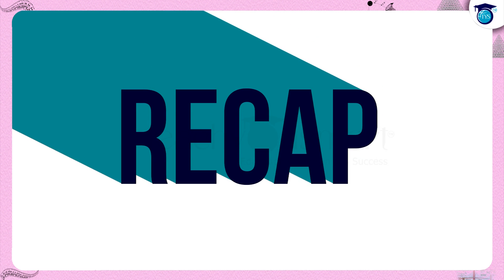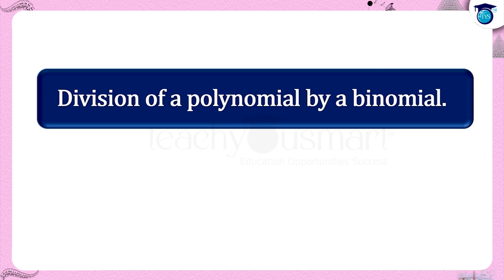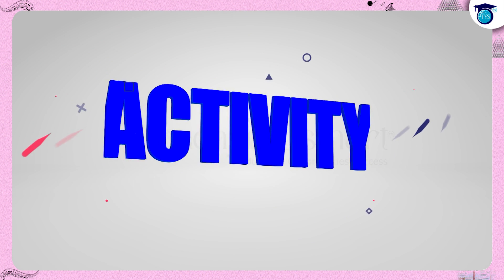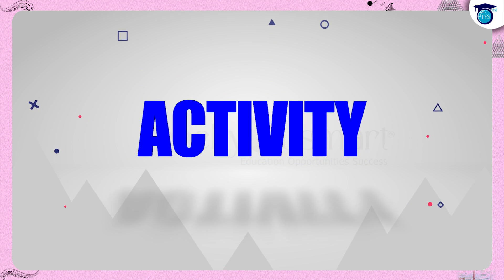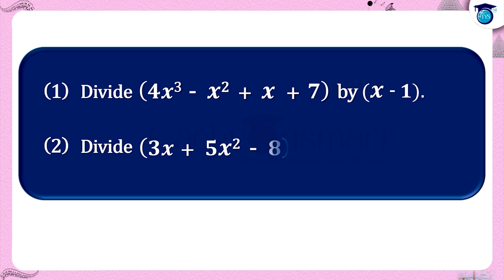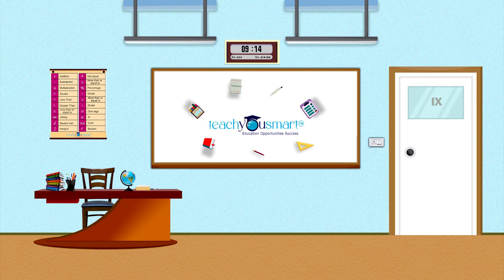Let's recall what we discussed today. We discussed division of a polynomial by a binomial and verified the division algorithm of polynomials. Before winding up, let's check how much you understood by doing an activity. Activity 1: Divide 4x³ - x² + x + 7 by x - 1. Activity 2: Divide 3x + 5x² - 8 by x + 1. That's all for now, see you all in the next class.